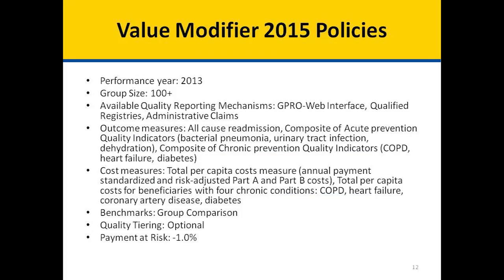The Value Modifier 2015 policies: Performance year is 2013. Group size is 100 or more eligible professionals. The available quality reporting mechanisms are GPRO Web Interface, Qualified Registries, or Administrative Claims. The outcome measures are all-cause readmission, a composite of acute prevention quality indicators — which include bacterial pneumonia, urinary tract infection, and dehydration — and a composite of chronic prevention quality indicators, which includes COPD, heart failure, and diabetes.